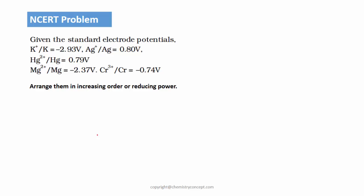Now these are the standard electrode potential values given, and we have to arrange these elements in increasing order of reducing power. We have just seen that these are reduction potential values.